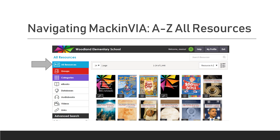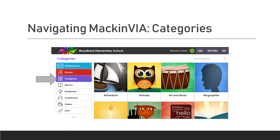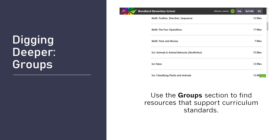We also have an all resources tab. I don't generally use the all resources tab because it's an overload of information — it puts all 1,446 eBooks, databases, audiobooks, videos, and links in one section, which is usually just way too much for students to try to filter through. We have the categories section, where you can find eBooks categorized by category.